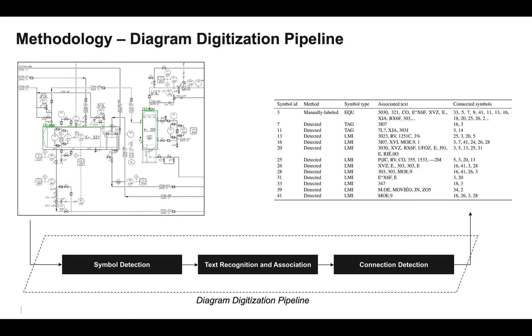So there are three steps in our diagram digitization pipeline: symbol detection, text recognition and association, and then connection detection. The inputs to the pipeline are a diagram image and an optional set of manually labeled symbols in the diagram. The output of the pipeline is an asset hierarchy table, showing the associated text and connections between symbols.